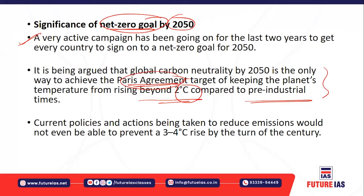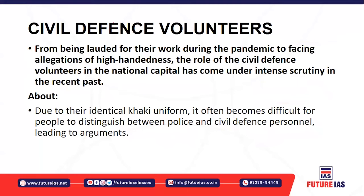Current policies across the world, if continued, will not prevent a 3 to 4 degree rise in temperature by the end of this century. This will have drastic and negative results on climate change, ecosystems, glaciers, sea levels, and human health. There will be extreme climatic variations that will negatively impact the anthropogenic environment.